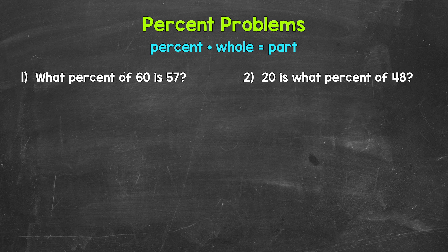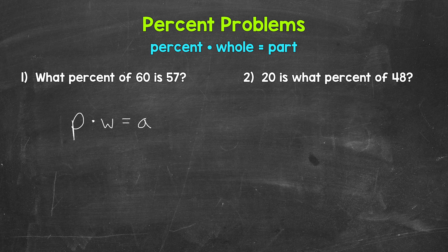Let's jump into number one: what percent of 60 is 57? I'm going to start by writing the equation using variables and then plug in. So percent times whole equals part — P for the percent, W for the whole, and A for the part. Now we plug in. When identifying the different parts of the equation, I like to start by identifying the percent and the whole first. In percent problems, we have a percent of a whole amount, which gives us the part.